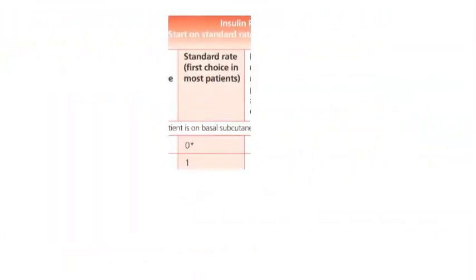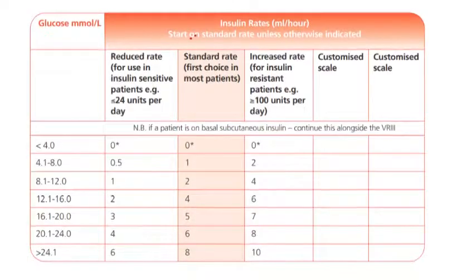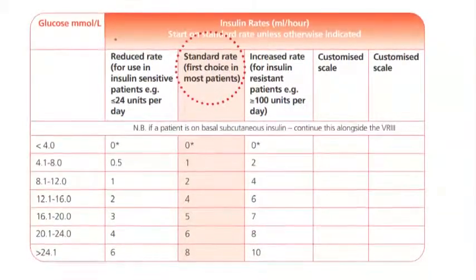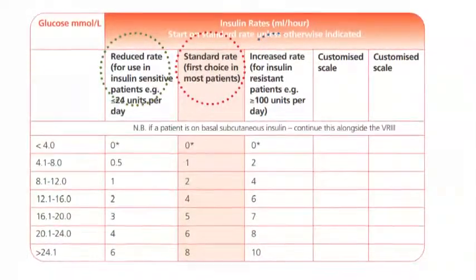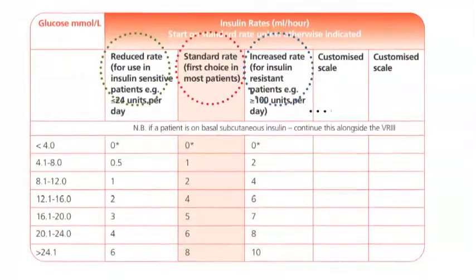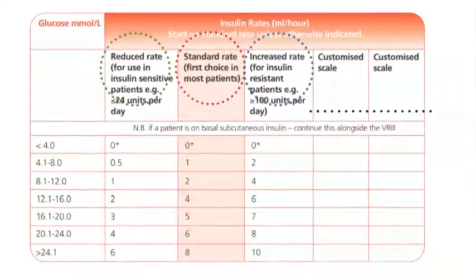The Joint British Diabetes Society guideline gives a variety of insulin infusion rates, but we normally start on the standard rate of variable rate IV insulin. You can start patients on a reduced rate if they are very insulin sensitive, or on an increased rate if they are very insulin resistant. You can also write a customized infusion rate, but always consult your diabetes team if writing a customized rate.